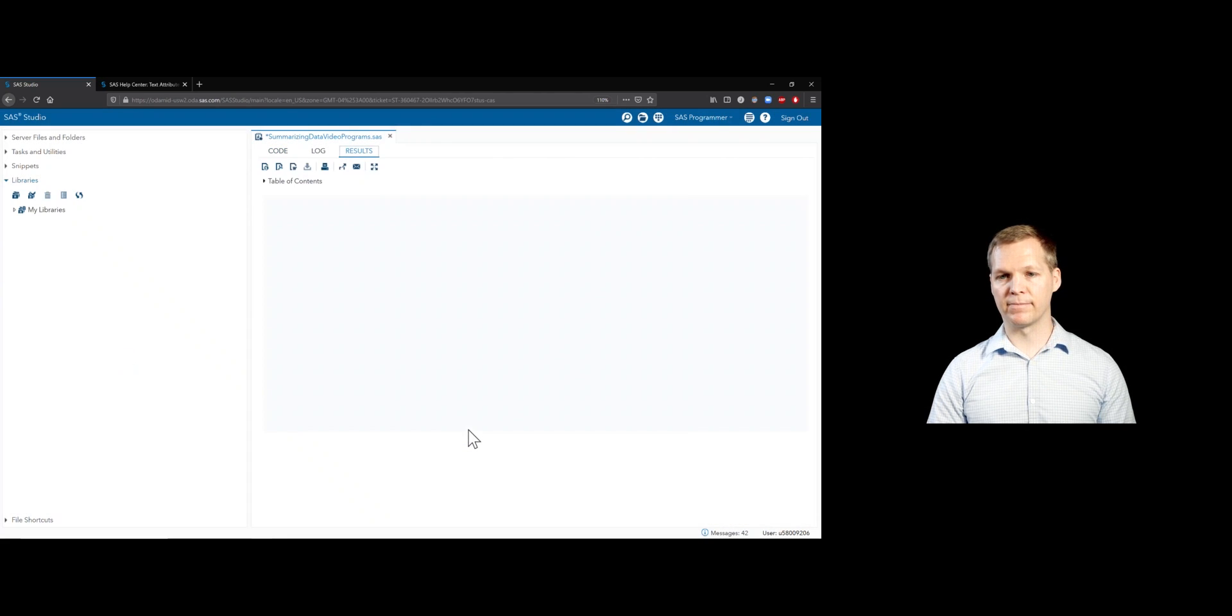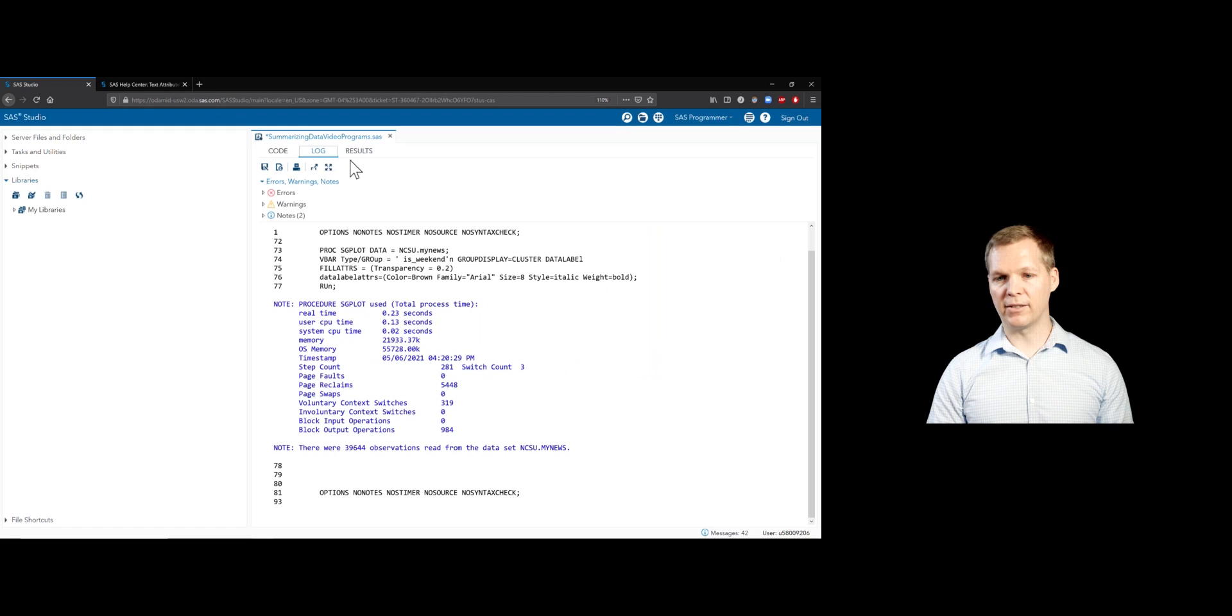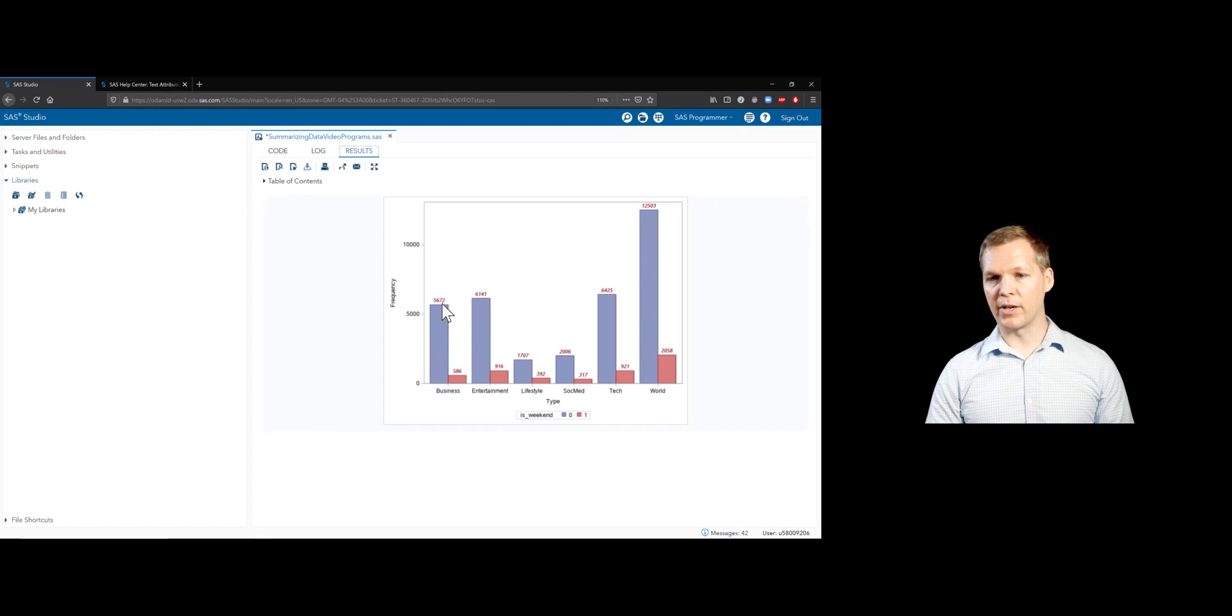Let's run that, see what happens. Looking at the log, everything looked fine. We go over here, we now have brown text that's now italicized, I think, and just slightly different. So we're able to customize this plot however we want. So this is pretty cool. We not only can summarize our information, but we can customize how it looks.